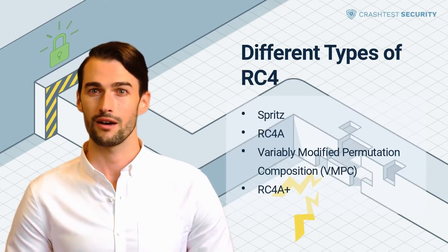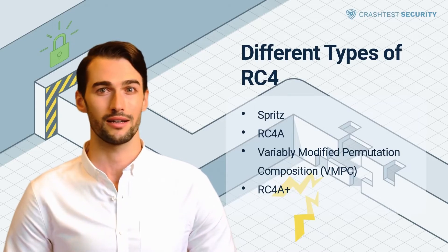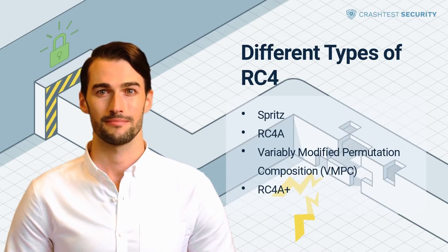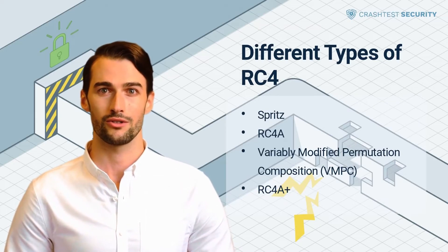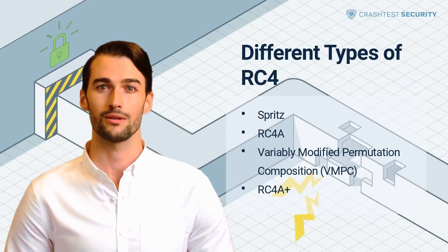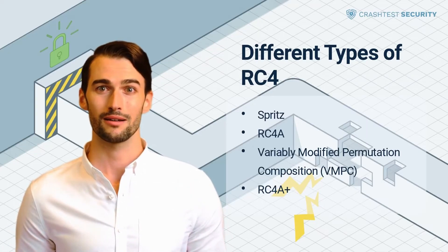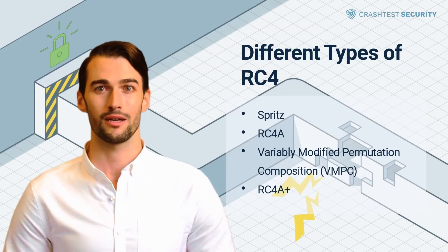Some RC4 variants have been developed to address security issues. Spritz can build cryptographic hash functions, an encryption algorithm supporting authenticated encryption with associated data, and a deterministic random bit generator.